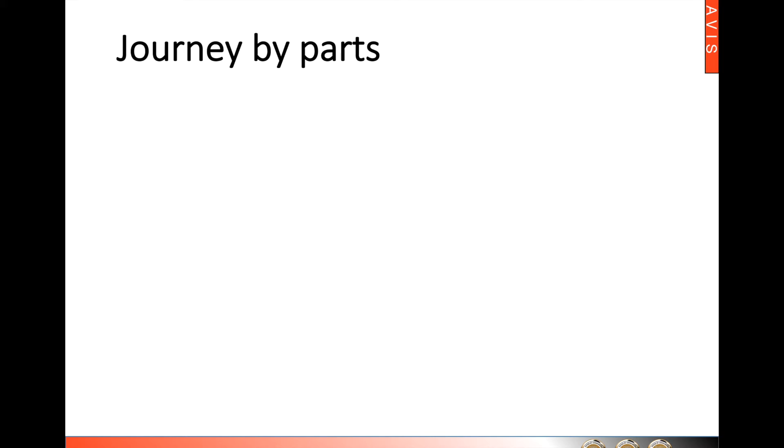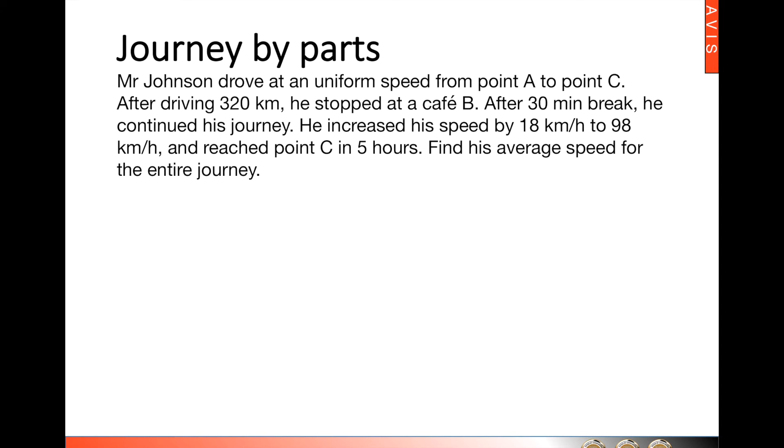Next, let's take a look at the Journey by Parts question. Now, we have the speed for the second part, which is 98 km per hour, and we have the time for the second part, which is 5 hours. So, using speed times time, we'll be able to find out what is the distance covered in Part 2. 490 km.